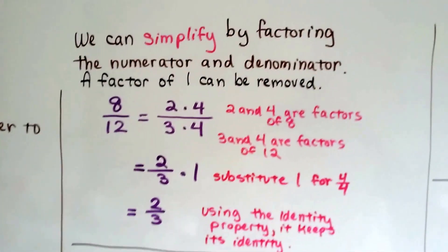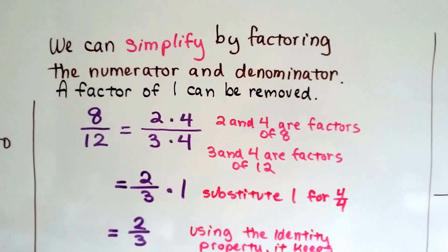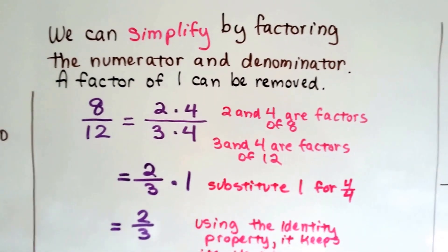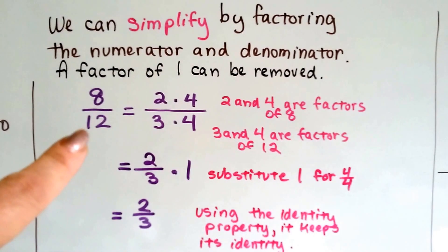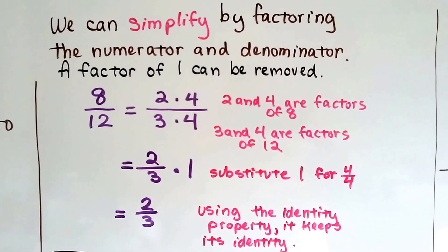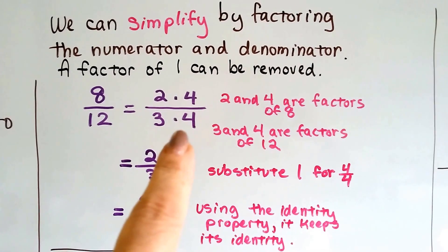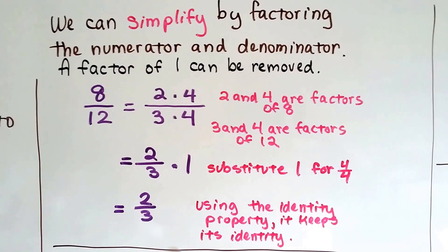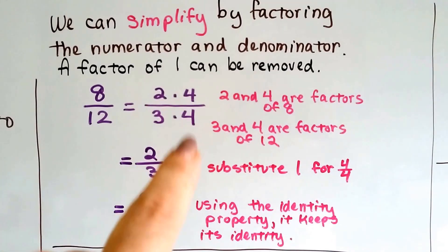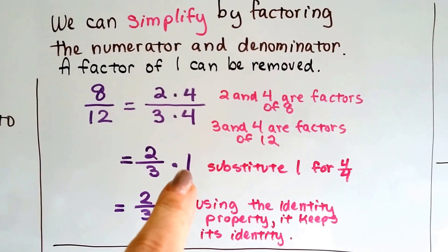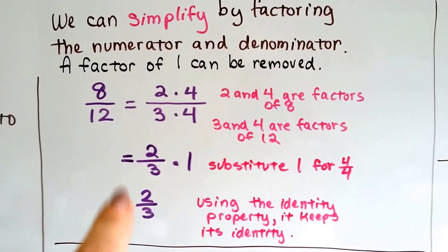And we can simplify by factoring the numerator and denominator, and a factor of 1 can be removed. If we've got 8 over 12, we find the factors for 8, which are 2 times 4. And we find the factors for 12, which are 3 times 4. And we get rid of this 4 over 4 and substitute a 1 in its place.